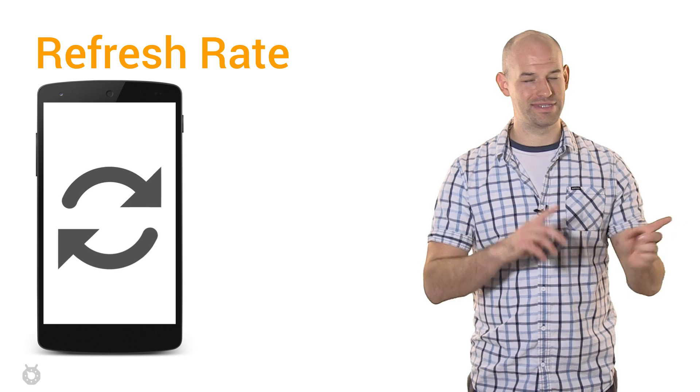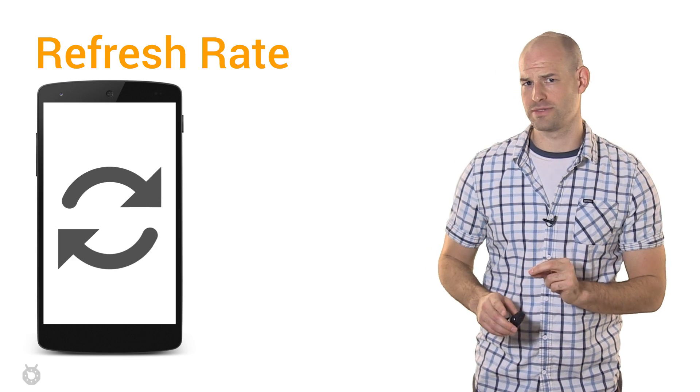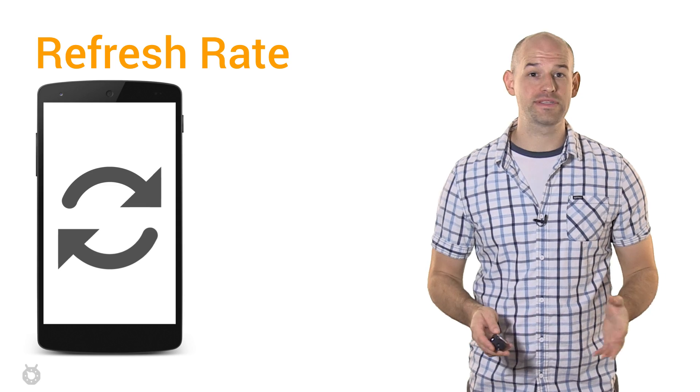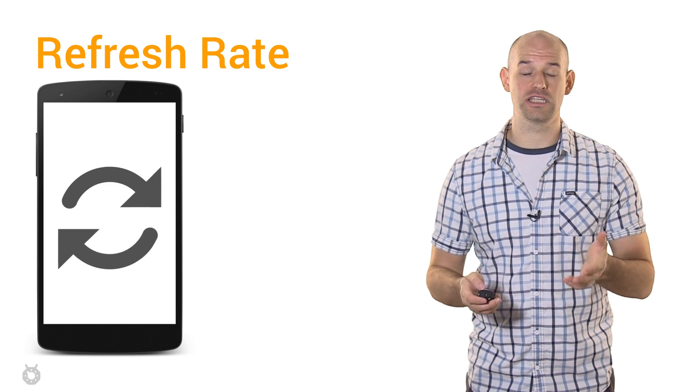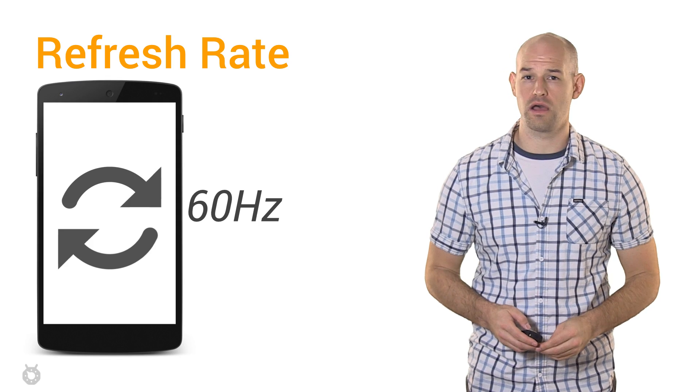But first, let's actually take a step back. Understanding vSync starts with understanding two other simple terms. The first is refresh rate, and it represents how many times a screen can update its display per second. This value is specified in hertz and is constant based on the hardware.